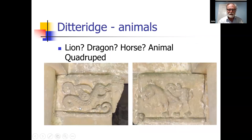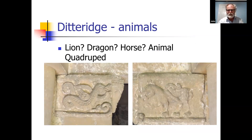Now, if you're a bit bedazzled by all this mathematics, a bit of light relief. If you look at Ditteridge, on the imposts on the left and right of the entrance there are two carvings. On the left, it's clearly a dragon — actually a wyvern because of the curly tail. On the right, the figure is much less clear. The literature calls it a lion, dragon, or horse in different sources. The listing describes it as an animal, and Pevsner calls it a quadruped. Any guesses as to what this actual sculpture is? Answers in the chat box.